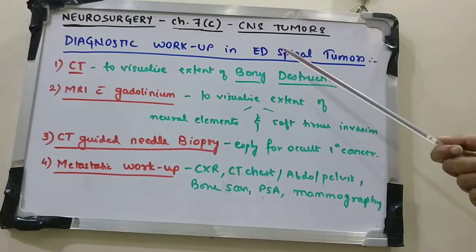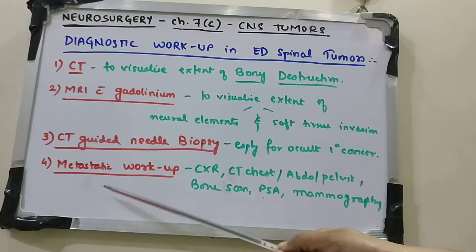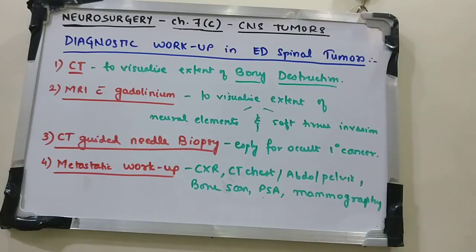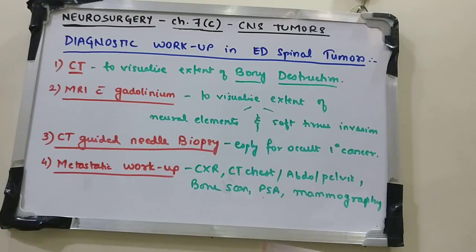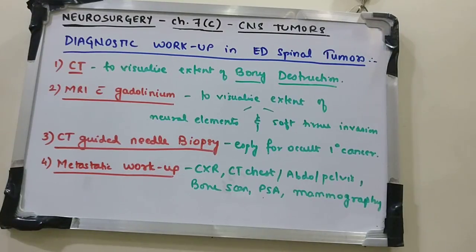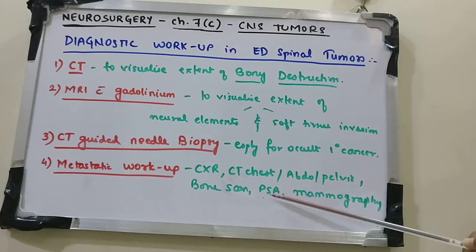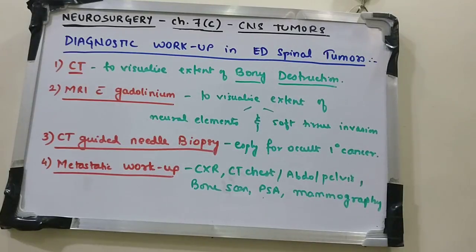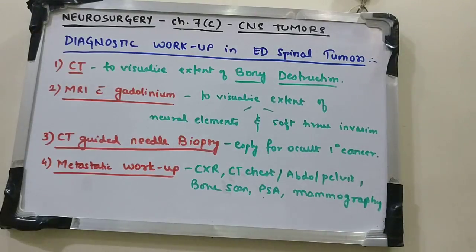Since most extradural spinal tumors are metastatic, a metastatic workup is needed to find the primary source. This includes chest X-ray and CT of the chest, abdomen, and pelvis. A bone scan, serum PSA level determination for prostate cancer, and mammography in women for breast cancer — a common primary source — are also performed.